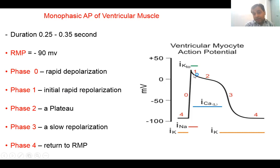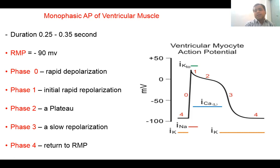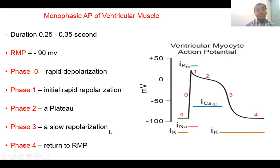Phase two is the plateau phase — after initial rapid repolarization, the potential in the cardiac muscle fiber remains steady for a particular duration. This is mainly because of the opening of long-lasting calcium channels allowing the very slow entry of calcium ions. The efflux of potassium going on slowly and the influx of calcium balance each other, maintaining the potential at a steady level — the plateau phase. In phase three, once a potential below minus 50 is approached, the long-lasting calcium channels close, potassium efflux continues causing slow repolarization, until the resting membrane potential is achieved in phase four.